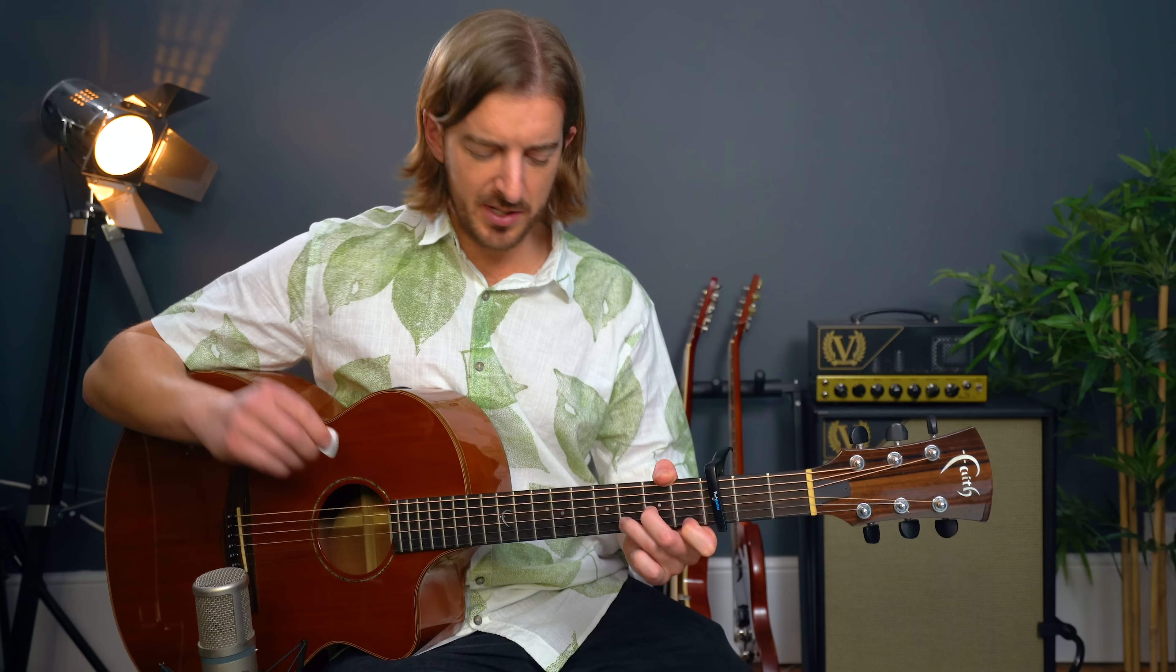And we have D minor for a bar, G for a bar, C for two, C over B for two, A minor for a bar.